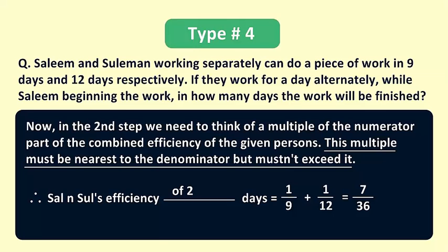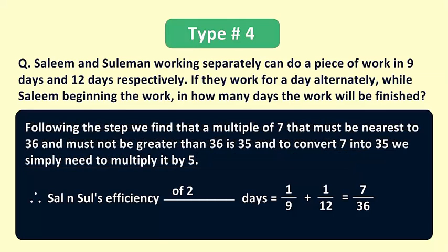So we have to think of a multiple of 7 which should be nearest to 36 but it should be less than 36. If we clearly observe, we find that a multiple of 7 that must be nearest to 36 and must not be greater than 36 is 35, and to convert 7 into 35 we simply need to multiply it by 5.